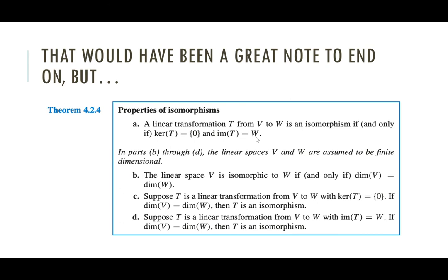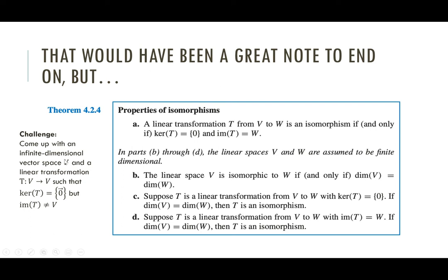I leave you with a challenge, just for fun: try to come up with some infinite dimensional vector space and some linear transformation from the space to itself such that the kernel is the zero vector, but the image is not the whole space. Come up with a reason why we need this extra condition. Your challenge is to find a linear transformation where the kernel is zero, but it's not an isomorphism. See you in the next video.